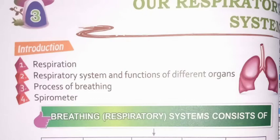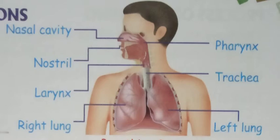The breathing or respiratory system consists of: nostril, nasal cavity, pharynx and larynx, trachea, bronchi, lungs, and alveoli. The nose is the nostril; the nasal cavity is the cavity of the nose; the pharynx is the part from which our sounds come; and the trachea is the pipe-like structure. Bronchi and lungs contain the alveoli.